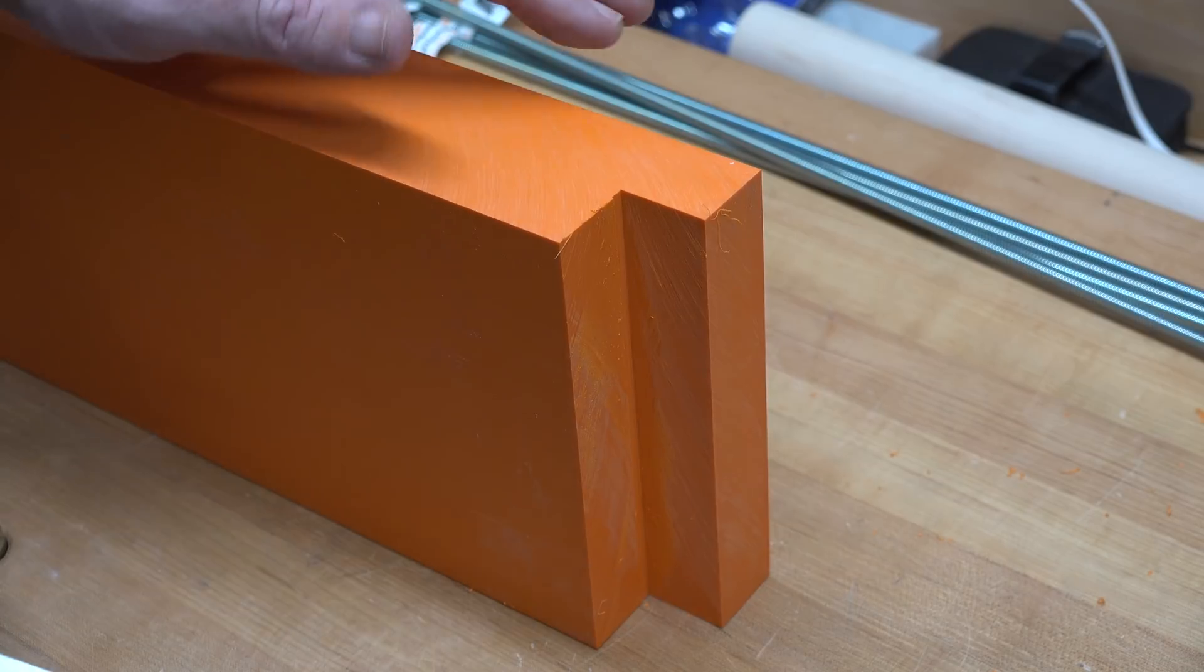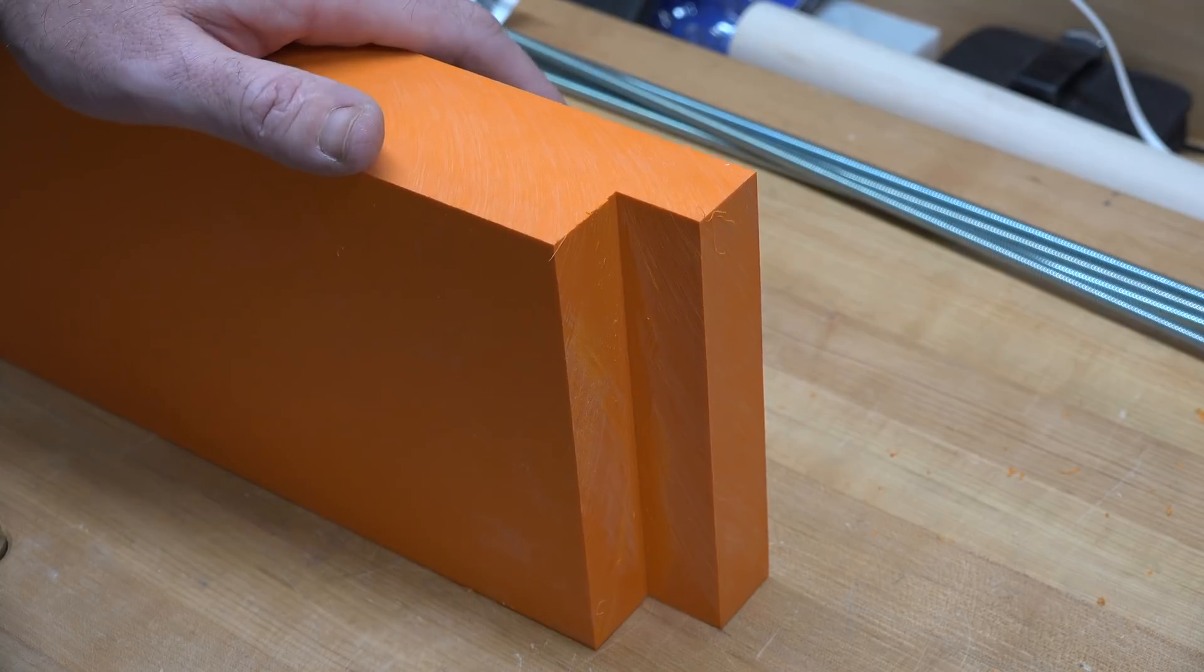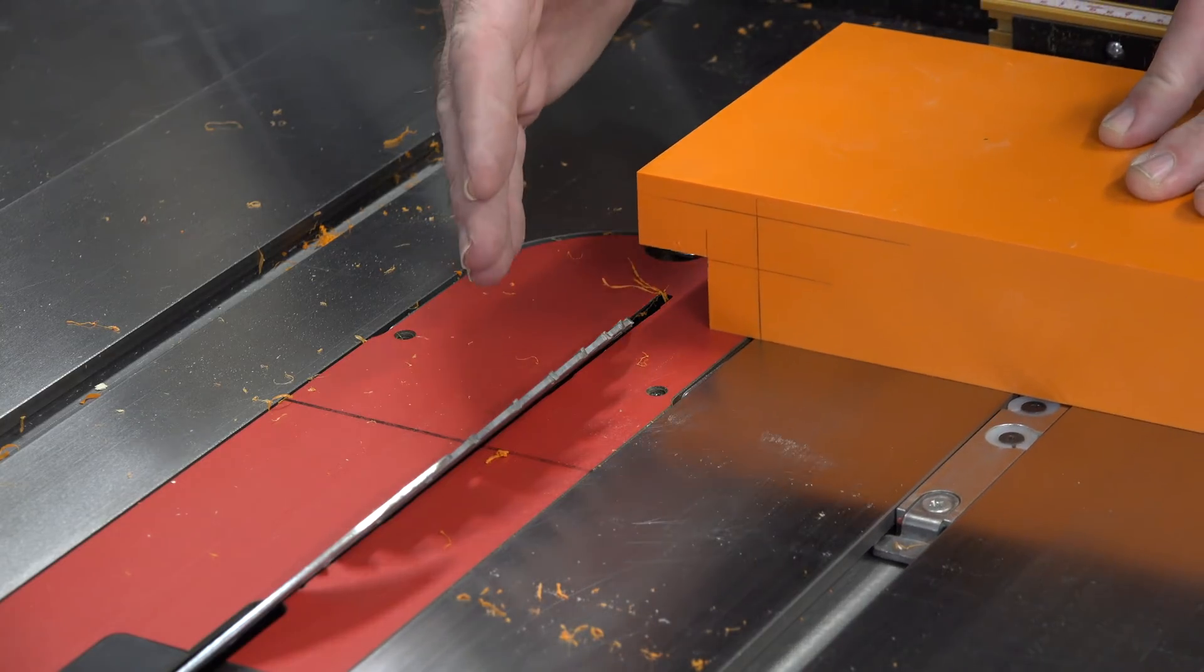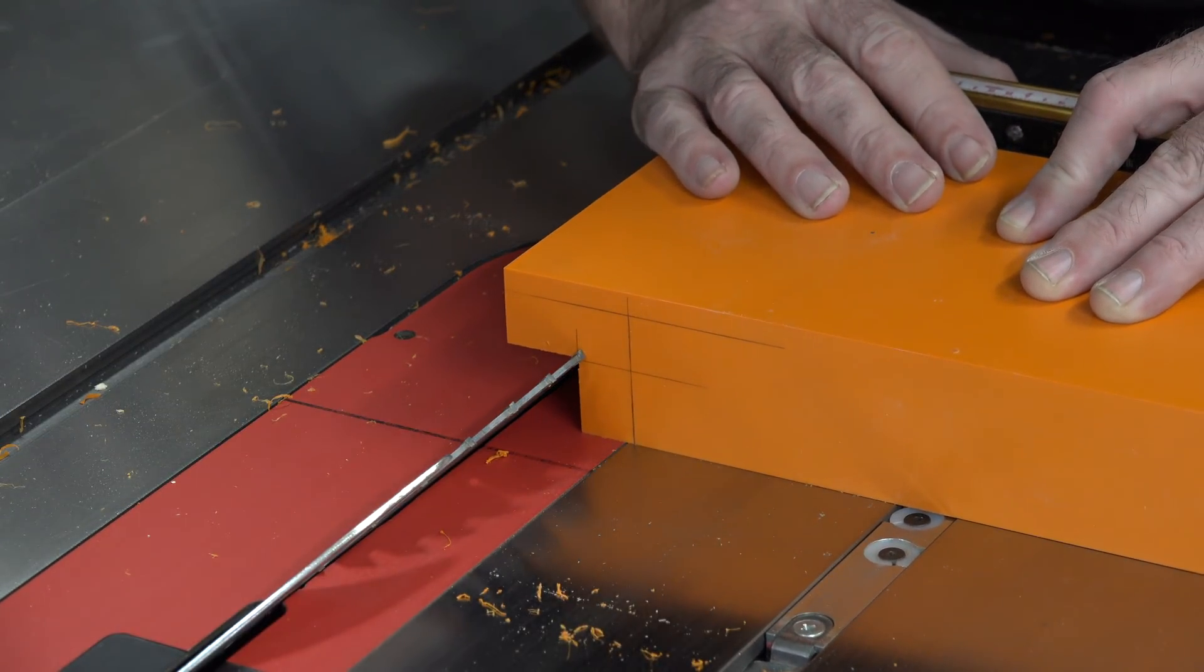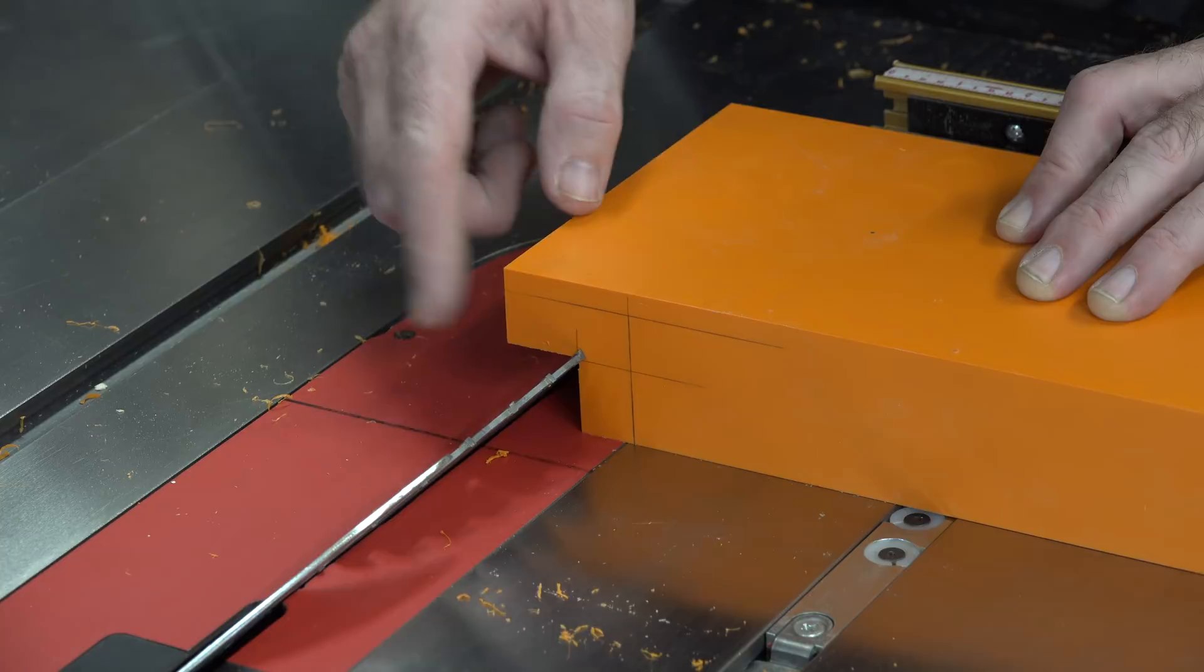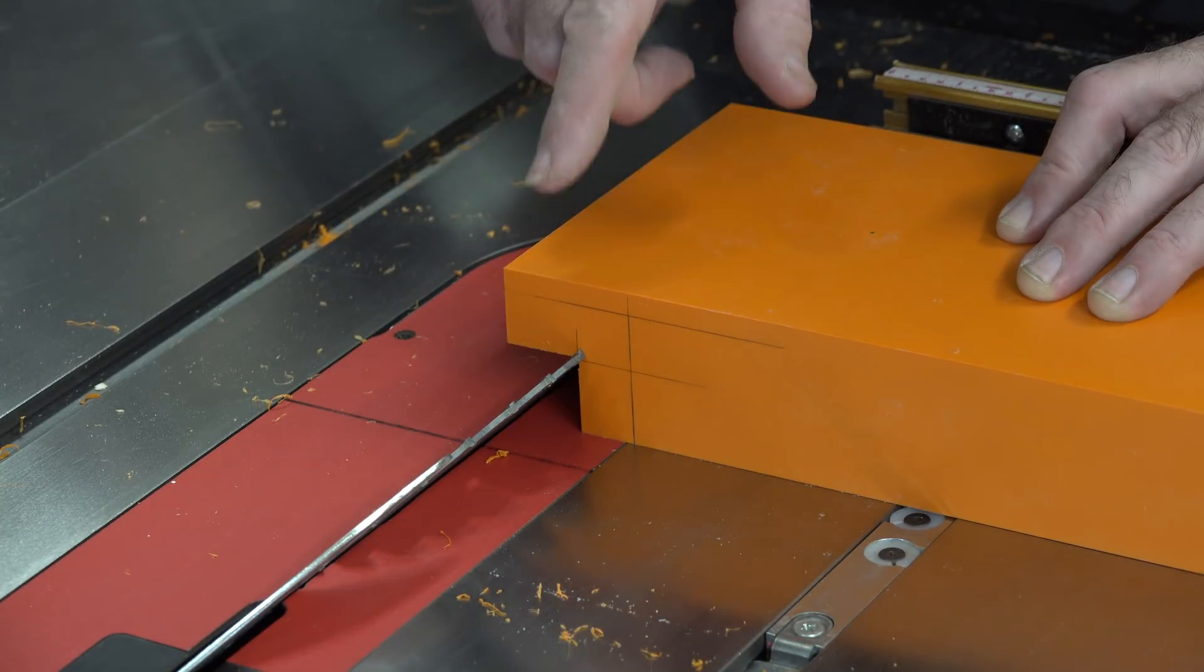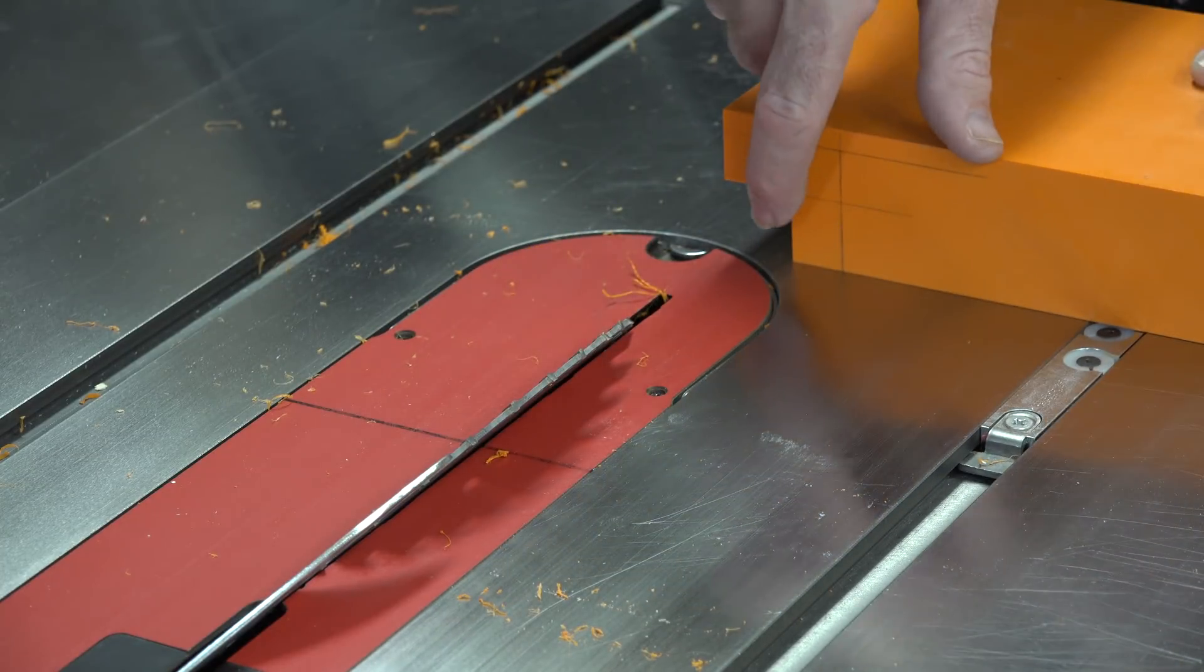We've got one more cut to make at the table saw before we can cut this off the large blank. For that, set your blade at a 45-degree angle. Set the height so it just comes in contact right there in the very corner where our two cuts join, and cut a slight 45-degree relief cut in that corner.